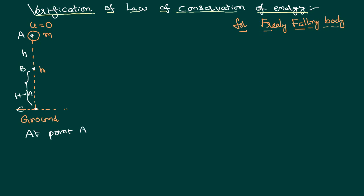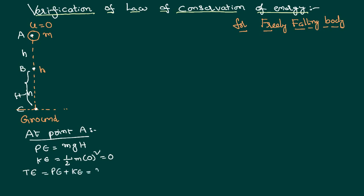At point A, that is from where the journey has started, at the maximum height: potential energy is MGH, because the total height from where it started is equal to H. Kinetic energy is half M times zero squared, so kinetic energy equals zero. Total mechanical energy is the sum of potential energy and kinetic energy, and its value is MGH.